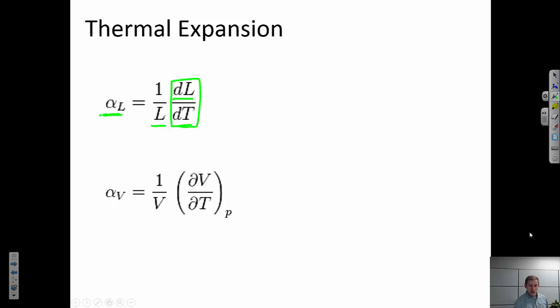Now let's think about units of the coefficient of linear thermal expansion very briefly. If I have dL over L, those are both in units of length so they'll cancel out. So the units of this are given in 1 over Kelvin, 1 over Celsius, 1 over some sort of temperature unit.